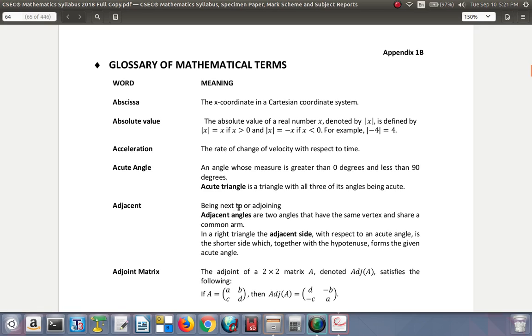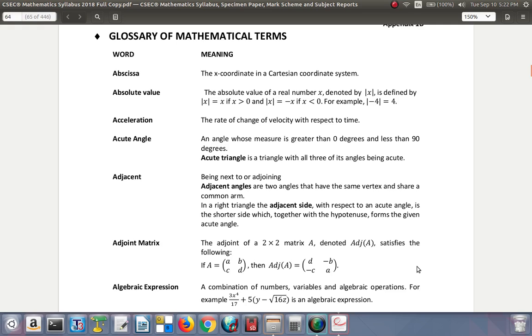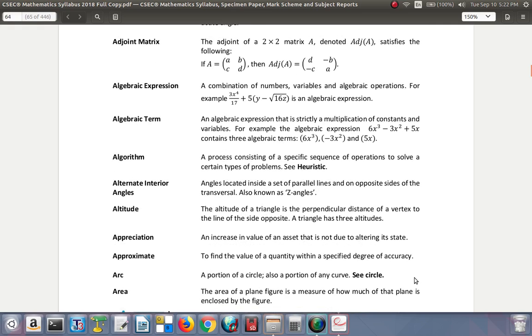Adjacent: being next to or adjoining. Adjacent angles are two angles that have the same vertex and share a common arm. In a right angle, the adjacent side with respect to an acute angle is the shorter side which together with the hypotenuse forms the given angle.